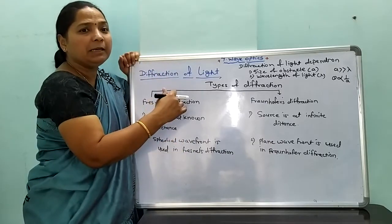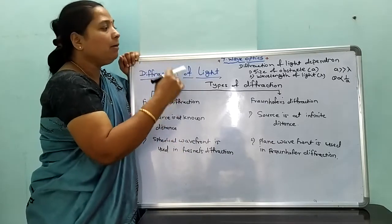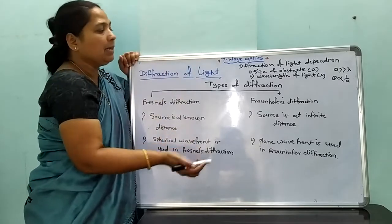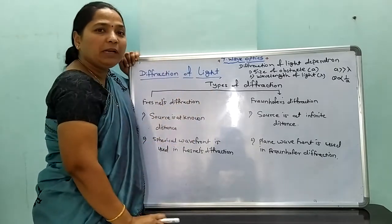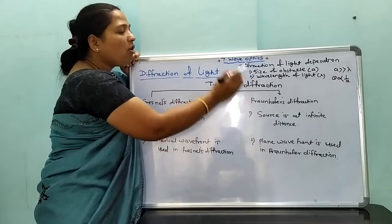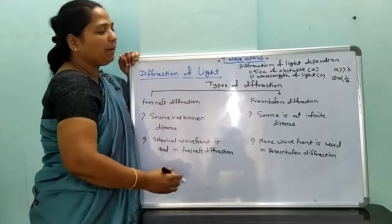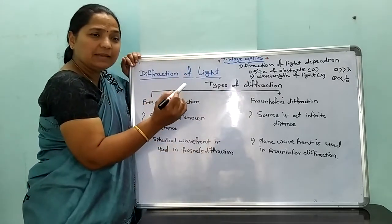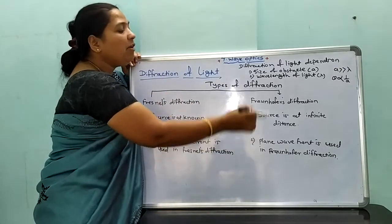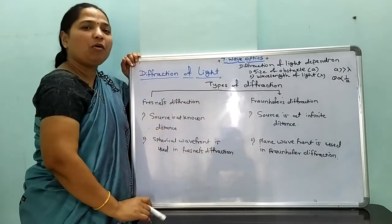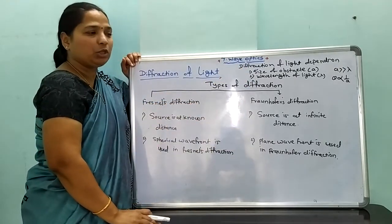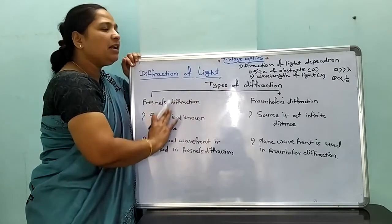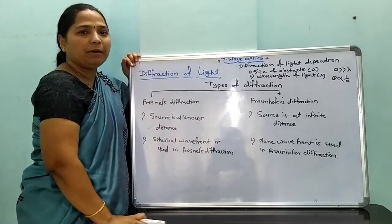When the source is at infinite distance from the screen, the light comes from infinite distance and a plane wavefront is obtained. Therefore, in Fraunhofer diffraction, the source is at infinite distance and a plane wavefront is used. This is the main difference between Fresnel diffraction and Fraunhofer diffraction.